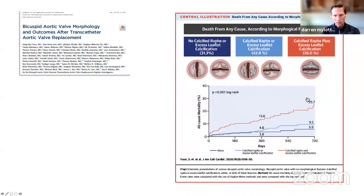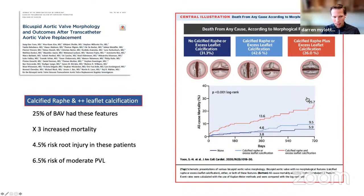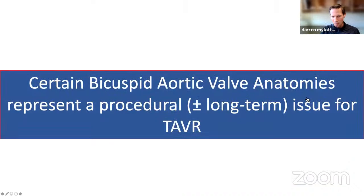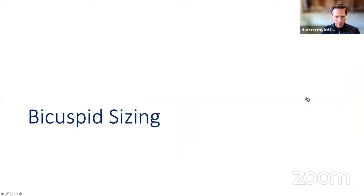They broke patients into three groups: those with no significant leaflet calcification or no excess raphae calcification; those with moderately calcified raphae or severe leaflet calcification; and those with both severe leaflet calcification and a severely calcified raphae. This latter group accounted for one quarter of all BAV cases, and they had three times the mortality of patients without both of these features. Not only that, but they had a 4.5% risk of aortic root injury and a 6.5% risk of moderate or greater paravalvular leak. So there is a subset of bicuspid aortic valves with increased mortality, increased procedural complications, and a worse long-term outcome.